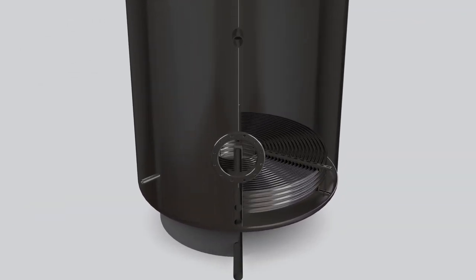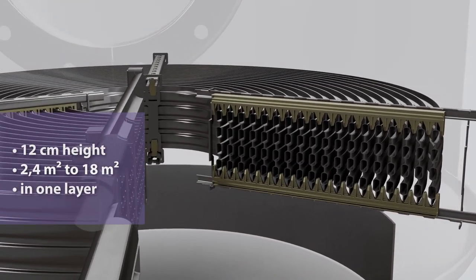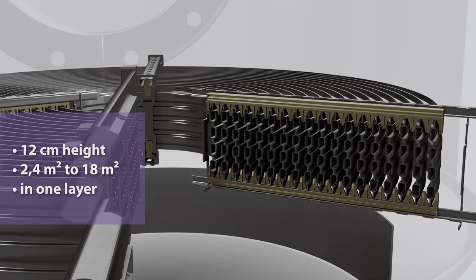Ecotherm flat spiral heating coils are produced with heat exchange surfaces from 2.4 to 18 meters squared, suitable for storage tanks from 380 to 4000 liters.